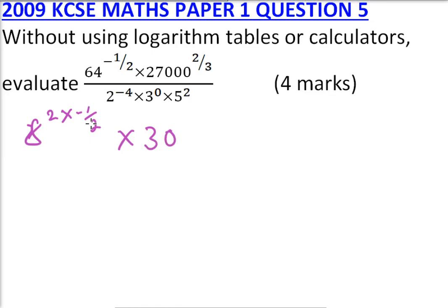Then 27,000, this is the same as 30 cubed, and you multiply by two-thirds. That is when you open up the bracket.